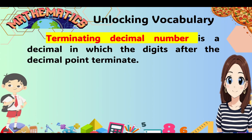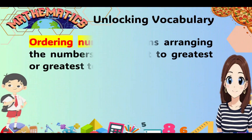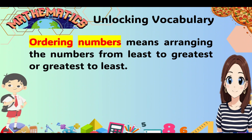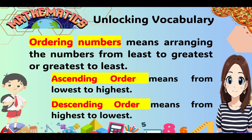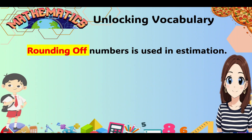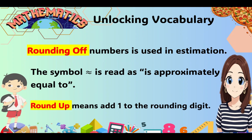A terminating decimal number is a decimal in which the digits after the decimal point terminate or stop at a certain number. Comparing numbers means determining whether a number is greater than, less than, or equal to another number. Ordering numbers means arranging the numbers from least to greatest or greatest to least. Ascending order means from lowest to highest, while descending order means from highest to lowest. Rounding off numbers is used in estimation, and it means adding 1 to the rounding digit.